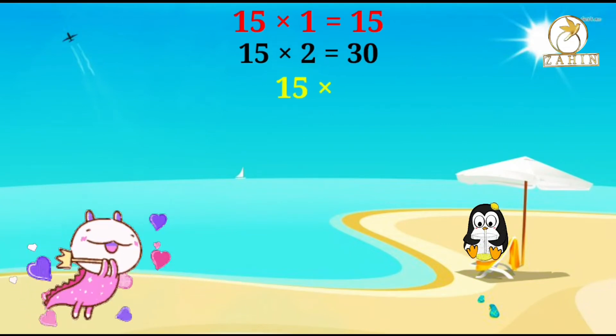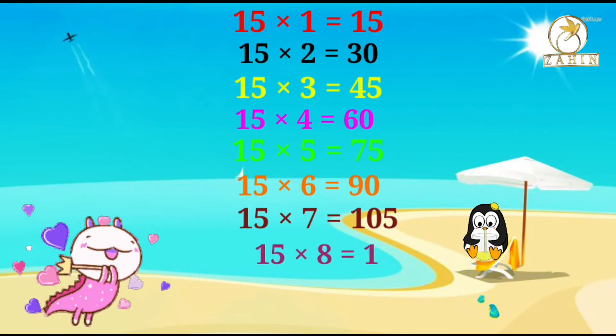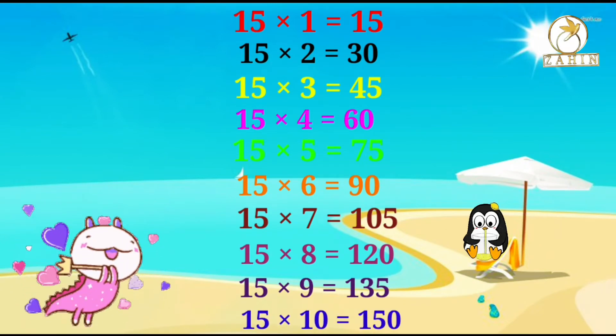15 times 2 equals 30, 15 times 3 equals 45, 15 times 4 equals 60, 15 times 5 equals 75, 15 times 6 equals 90, 15 times 7 equals 105, 15 times 8 equals 120, 15 times 9 equals 135, 15 times 10 equals 150.